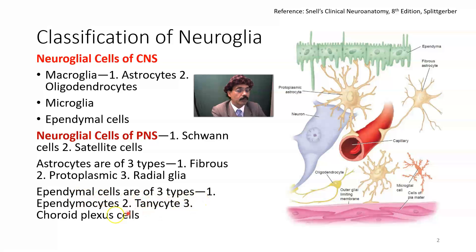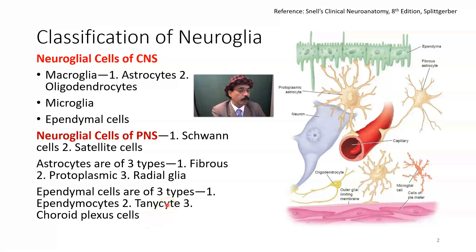Ependymal cells are of three types: ependymocytes, which are present around the third ventricle and essential for exchange of cerebrospinal fluid with the hypothalamo-hypophyseal system of circulation; and choroid plexus cells, which are essential to produce cerebrospinal fluid.